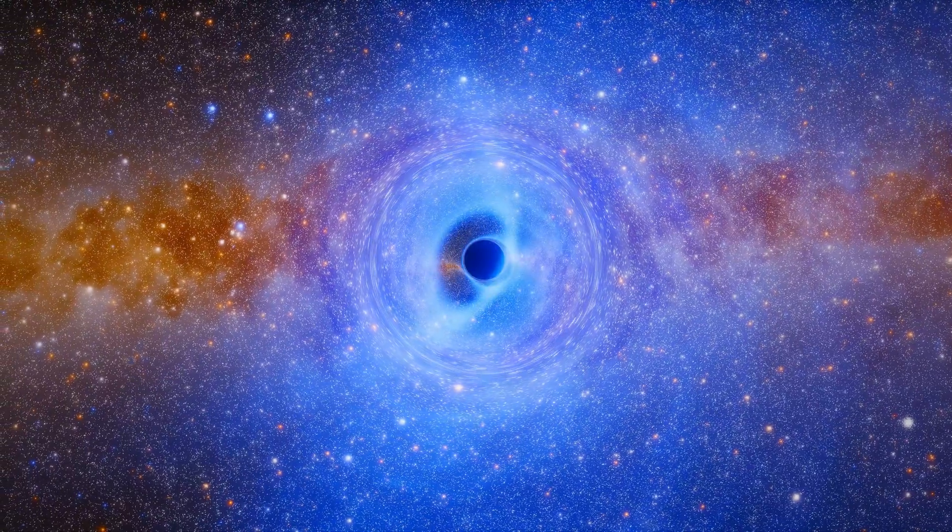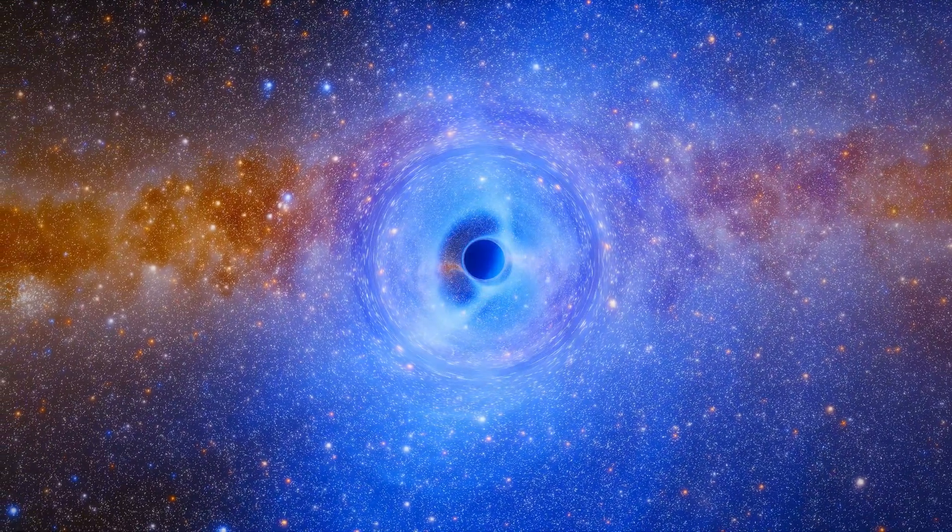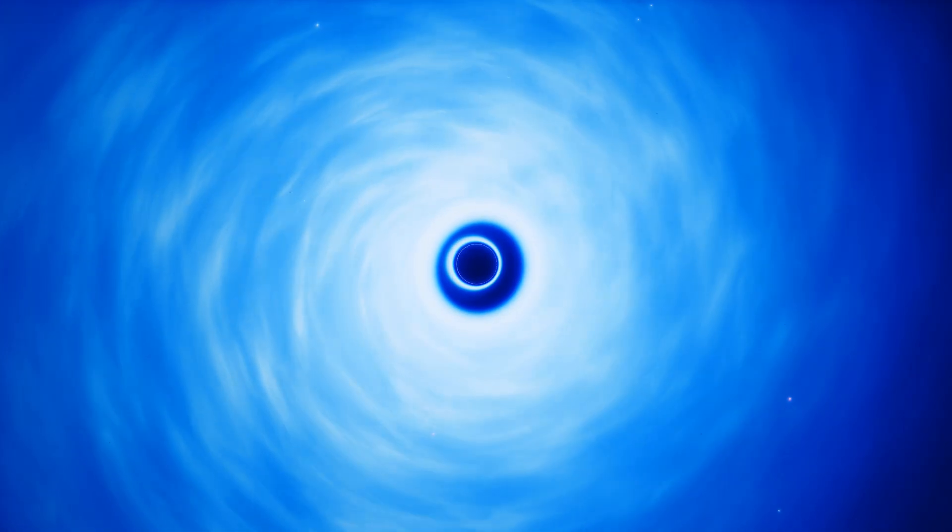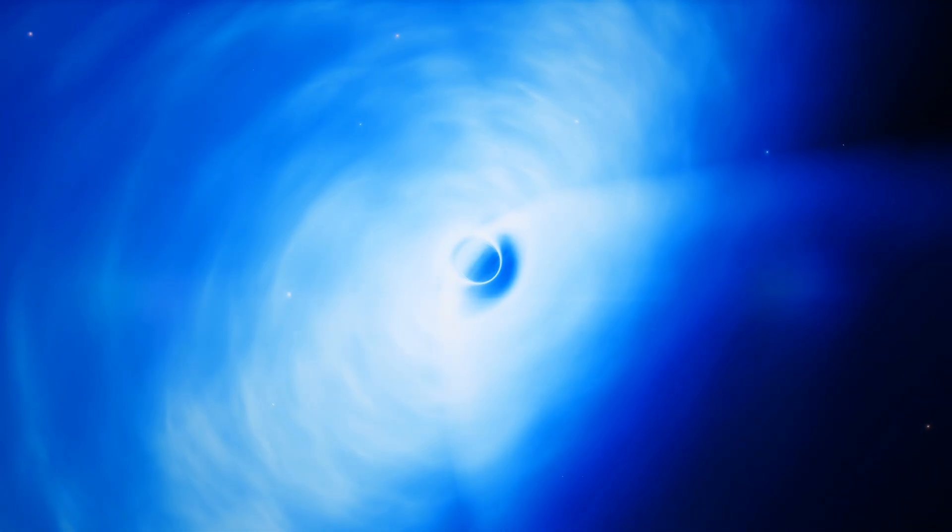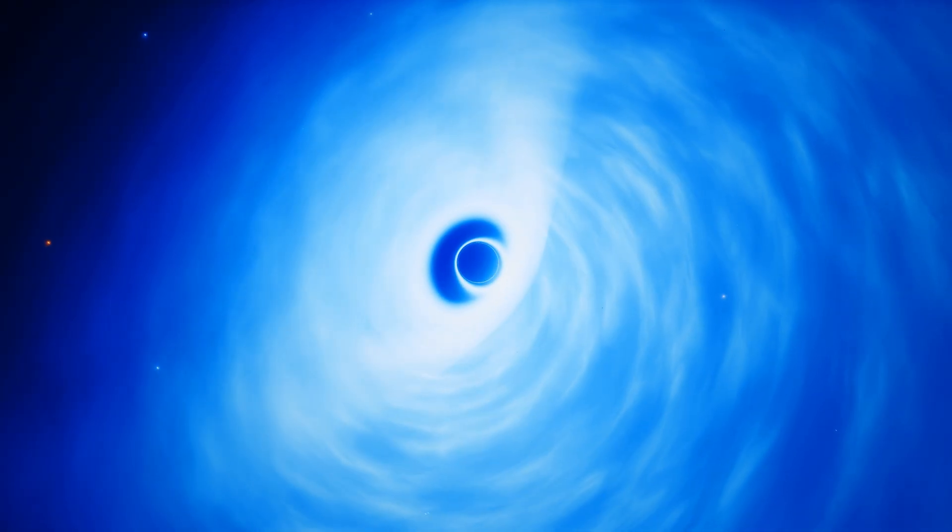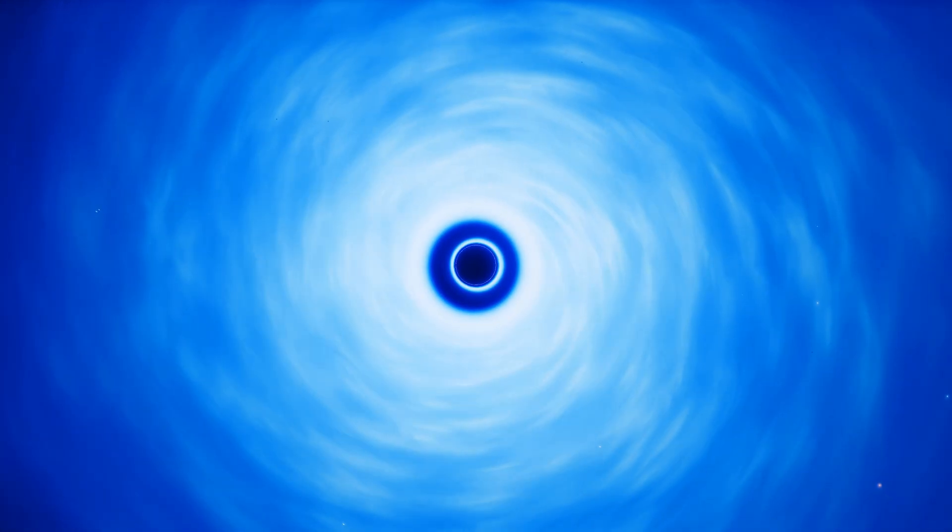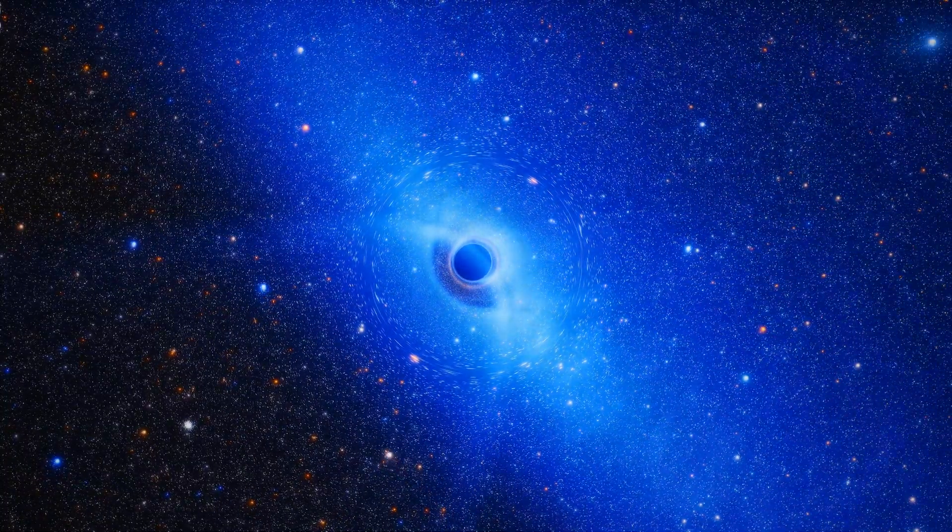But unlike black holes in movies, Sagittarius A star is surprisingly quiet. Most supermassive black holes are surrounded by bright, violent accretion disks. Some swallow so much material that they outshine their entire galaxy. Ours is barely eating. Less than one percent of the gas that falls toward it actually makes it in. The rest gets pushed away by magnetic forces and hot outflows. That's why the glow around it is so faint compared to black holes in other galaxies. If Sagittarius A star were as active as some others, Earth would experience intense radiation, even from twenty-six thousand light-years away. We're lucky our black hole is sleeping.